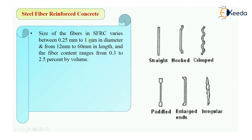The size of fibers used in SFRC: diameter will vary between 0.25 mm to 1 mm, and length will be 12 mm to 60 mm generally. The fibers may be straight fibers, hooked fibers, crimped fibers, or paddled. You can see the shape of these — straight fibers, hooked fibers, and crimped fibers are the various types of fibers we use.